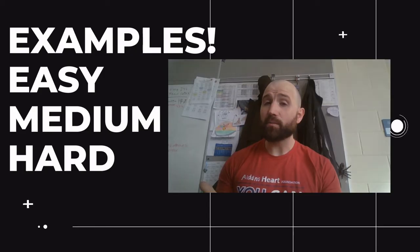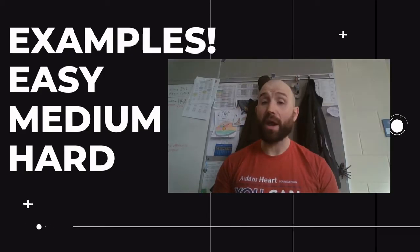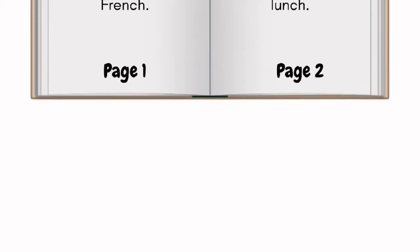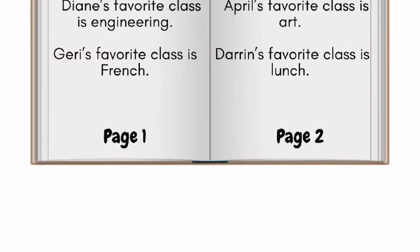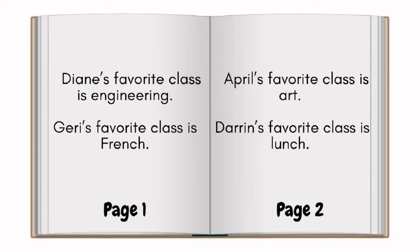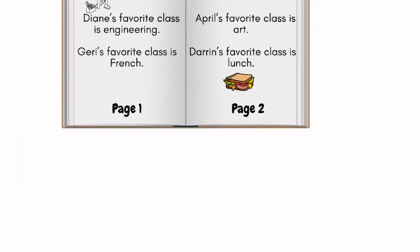I think the best way to show you this is through a couple examples, so get ready for an easy, a medium, and a hard. Let's dive in with our easy example. Let's pretend that this was the passage you had to analyze: Diane's favorite class is engineering. Jerry's favorite class is French. April's favorite class is art. Darren's favorite class is lunch.